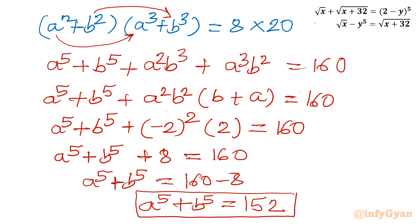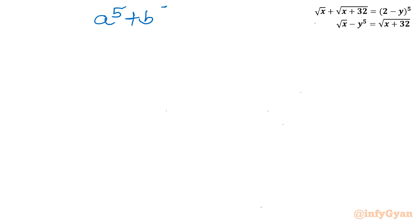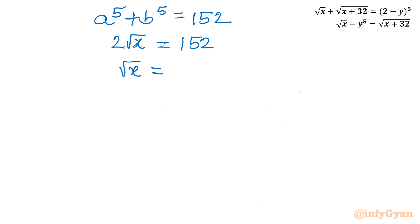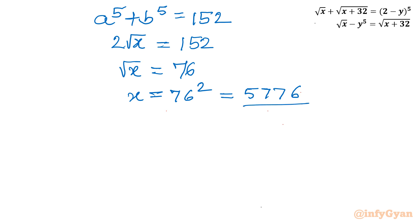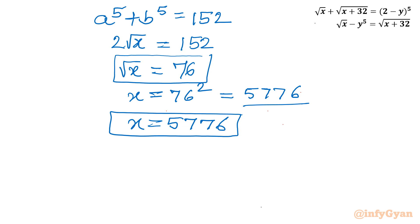Now since a power 5 plus b power 5 equals 2 root x, we substitute: 2 square root x equals 152. Dividing both sides by 2, root x equals 76. Therefore x equals 76 squared, which equals 5776. So x equals 5776 and square root x equals 76.